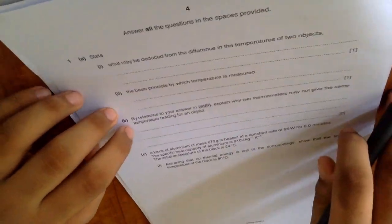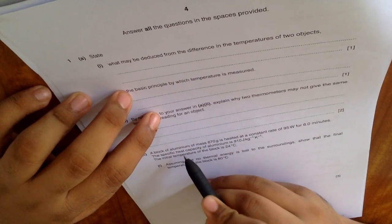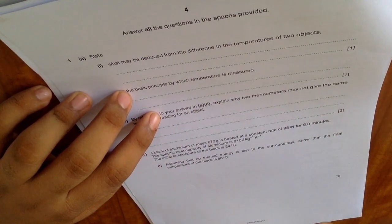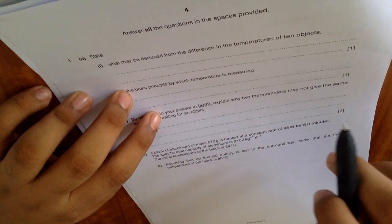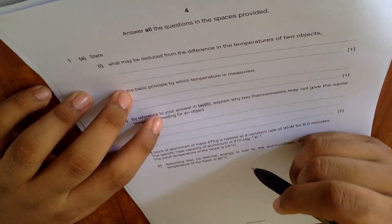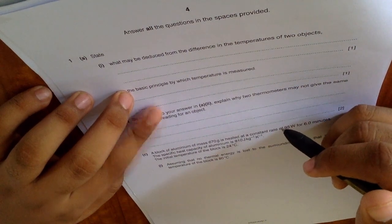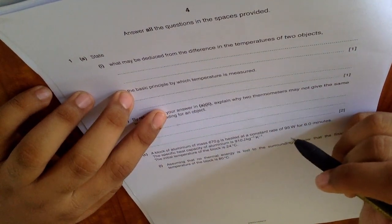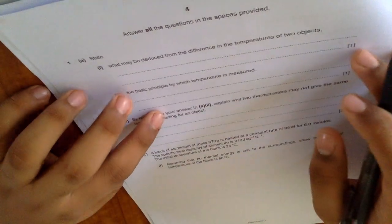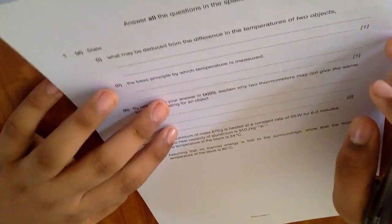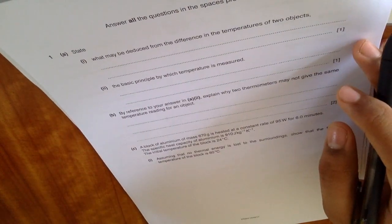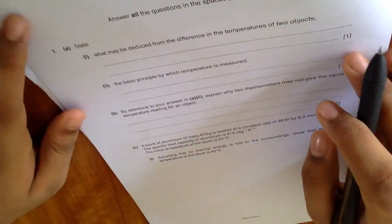The calculation part. Alright, a block of aluminum of mass 670 grams is heated at a constant rate of 95 watts for six minutes. The specific heat capacity is 910 joules per kilogram per kelvin, the initial temperature is 24 degrees celsius. Assuming no thermal energy is lost so that the final temperature of the block is 80 degrees celsius.